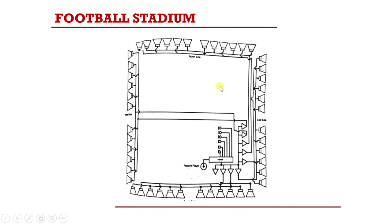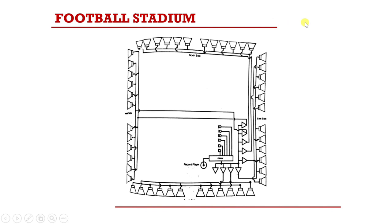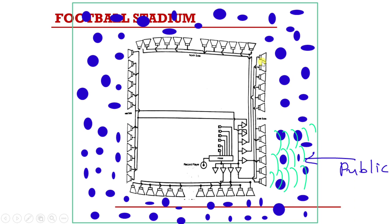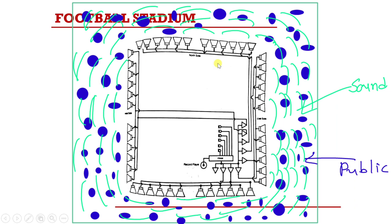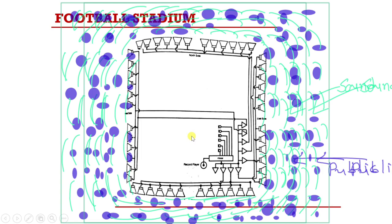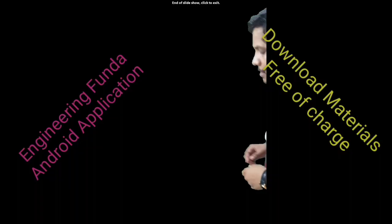In a football stadium, speakers are arranged and directed towards the audience stands. The audience in the stands can listen to the commentary through these speakers. The sound is directed so that it does not go towards the players on the field — the players should not be disturbed by loud commentary while the public in the stands can hear it clearly.